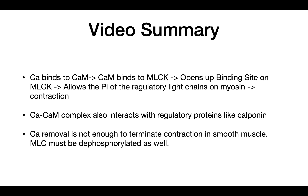In summary, we talked about three things today: first, how contraction occurs in smooth muscle and a summary of all the steps; second, how the calcium-calmodulin complex interacts with regulatory proteins like calponin; and lastly, how contraction is terminated. I hope this video helped you understand how contraction occurs in smooth muscle. Thanks for watching, and I hope to see you next time.